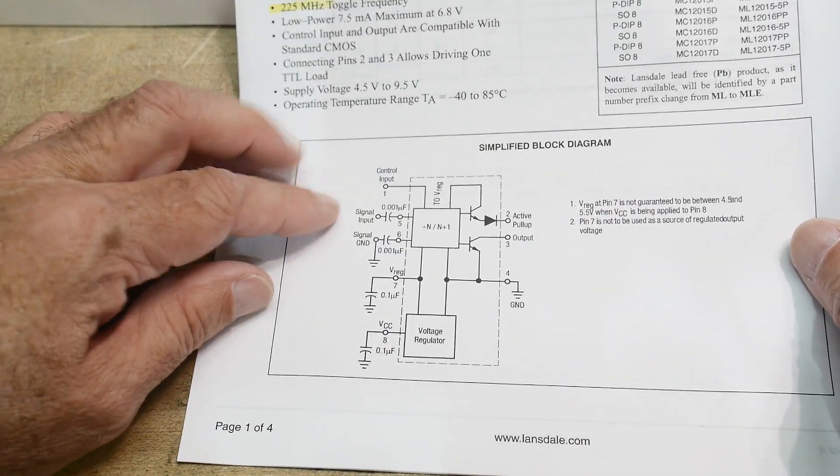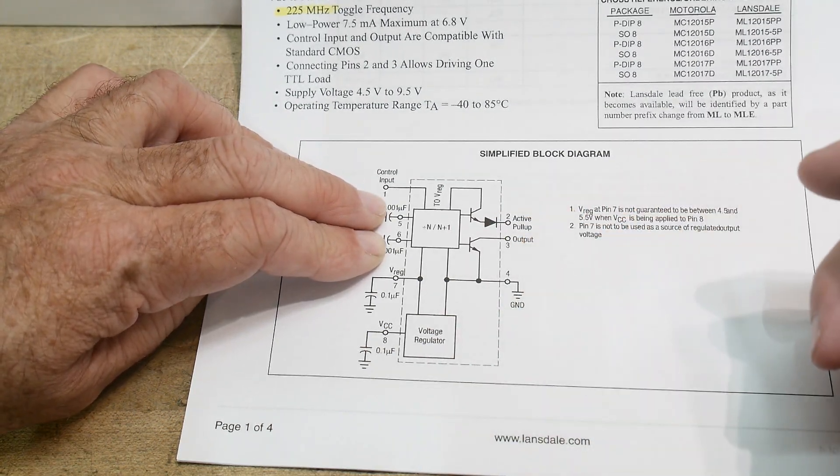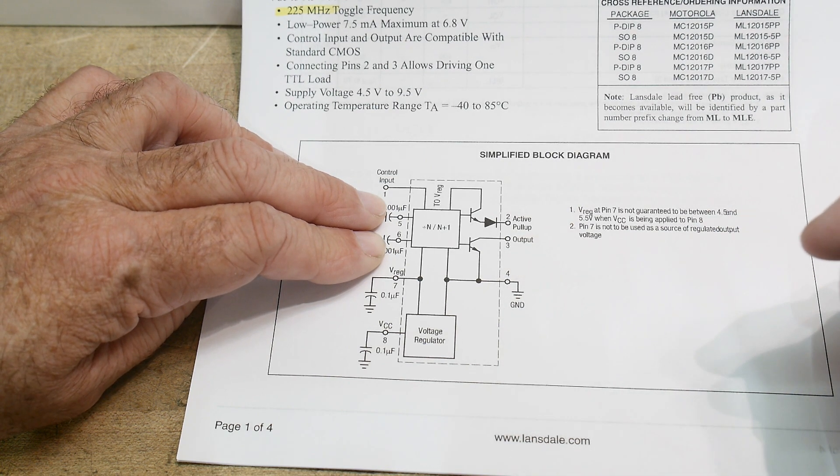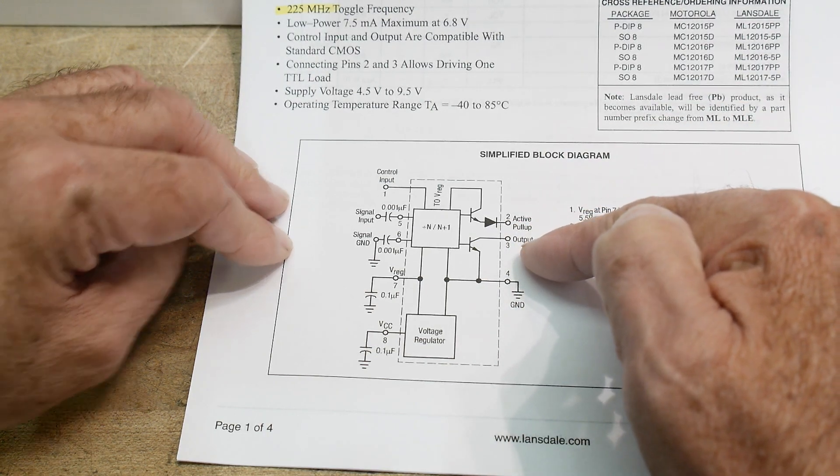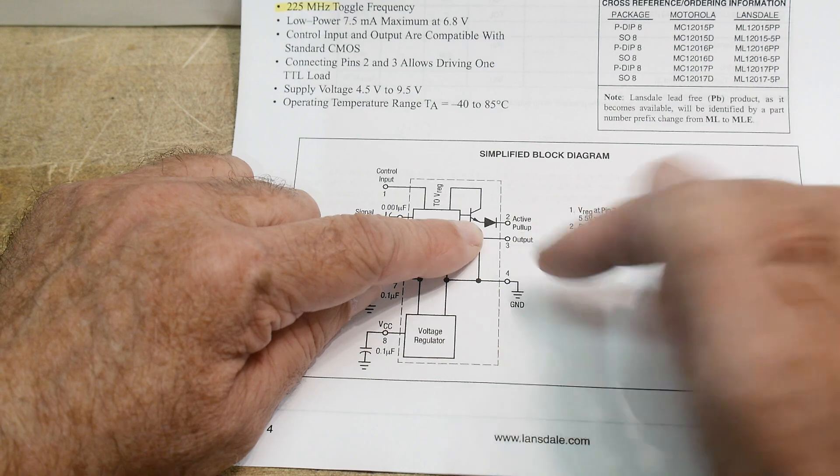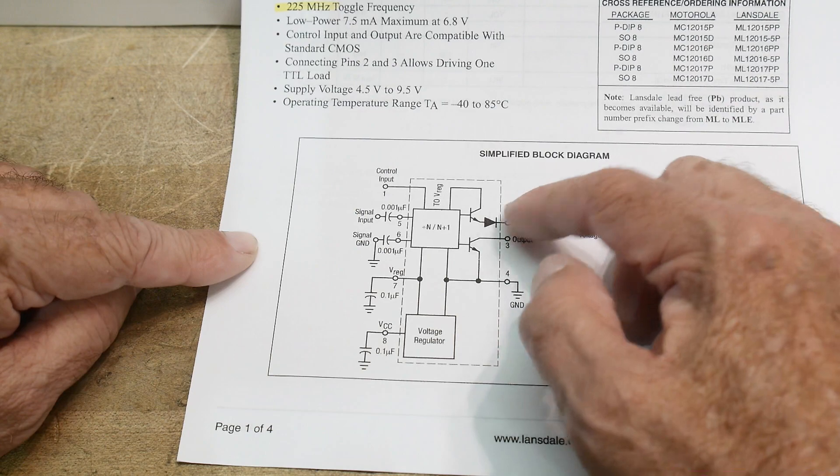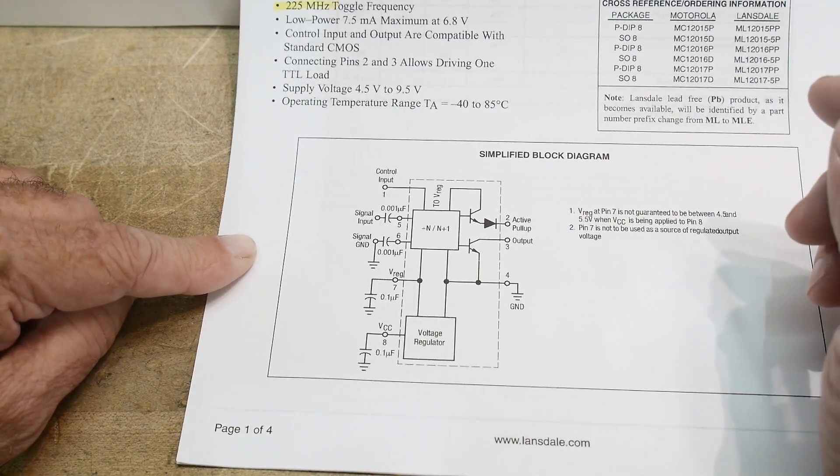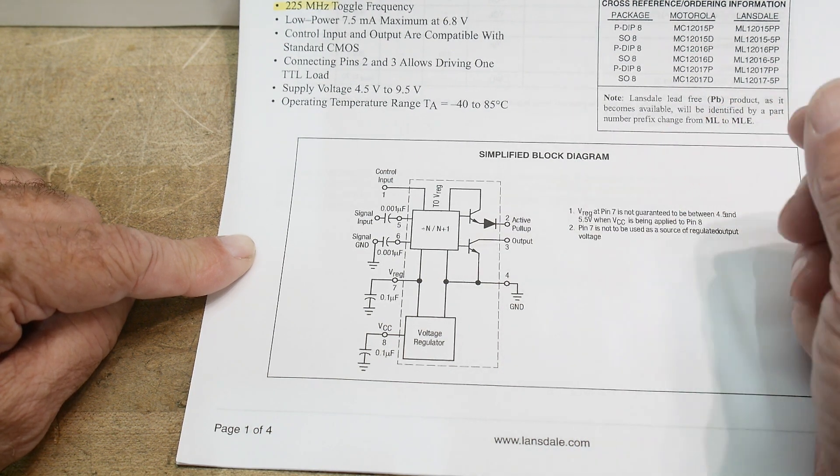Let's see here, block diagram, the inputs, and then there's an output, which is a open collector. It looks like there's a dual output. I don't know if they're out of phase or whatever, active pull-up output. Maybe pin two acts as the pull-ups. If you don't want to have your own pull-up, it'll provide a pull-up for you. That's kind of strange. You can then tie pins two and three together. I don't know, kind of strange. Maybe that makes it TTL compatible or something.